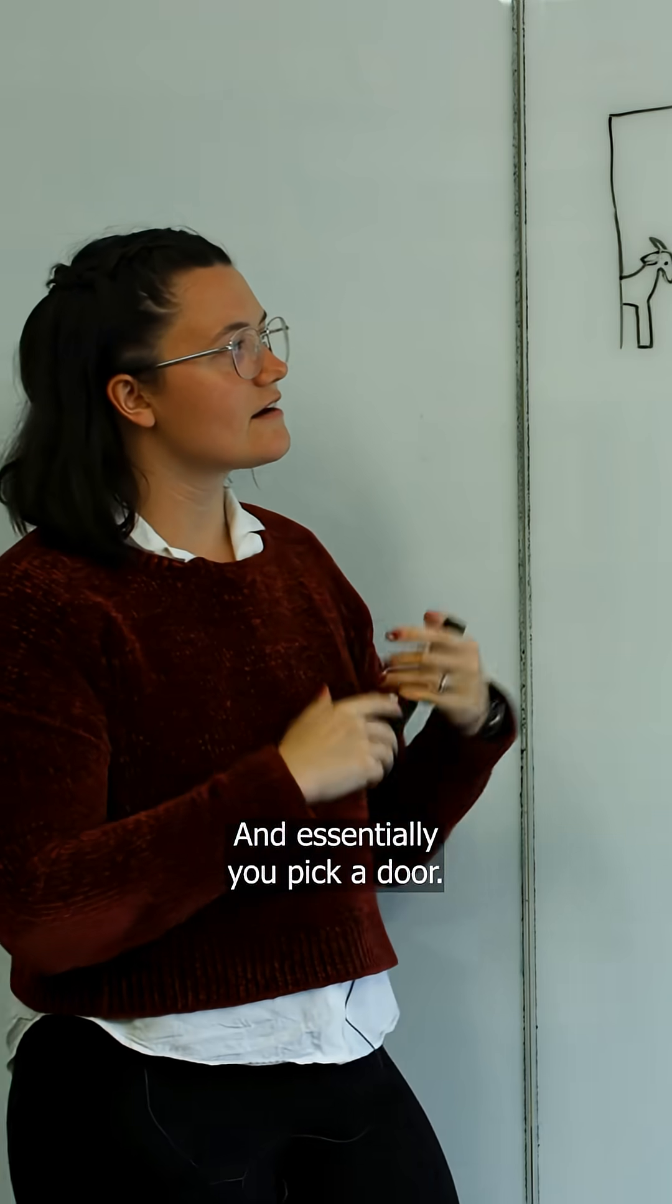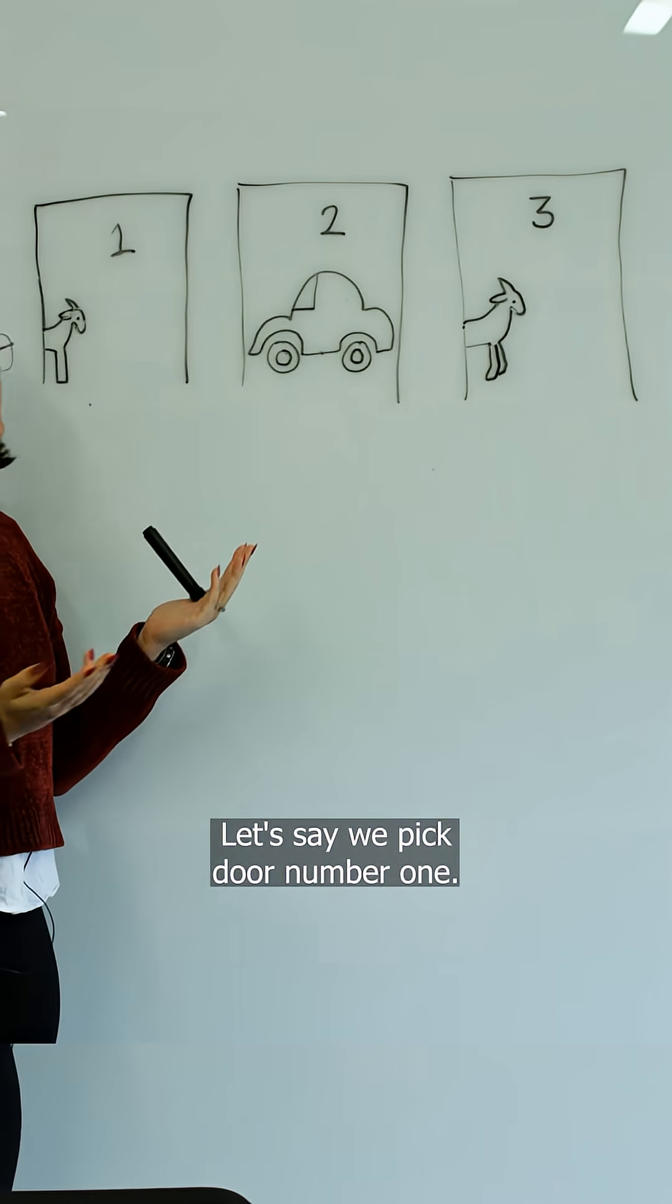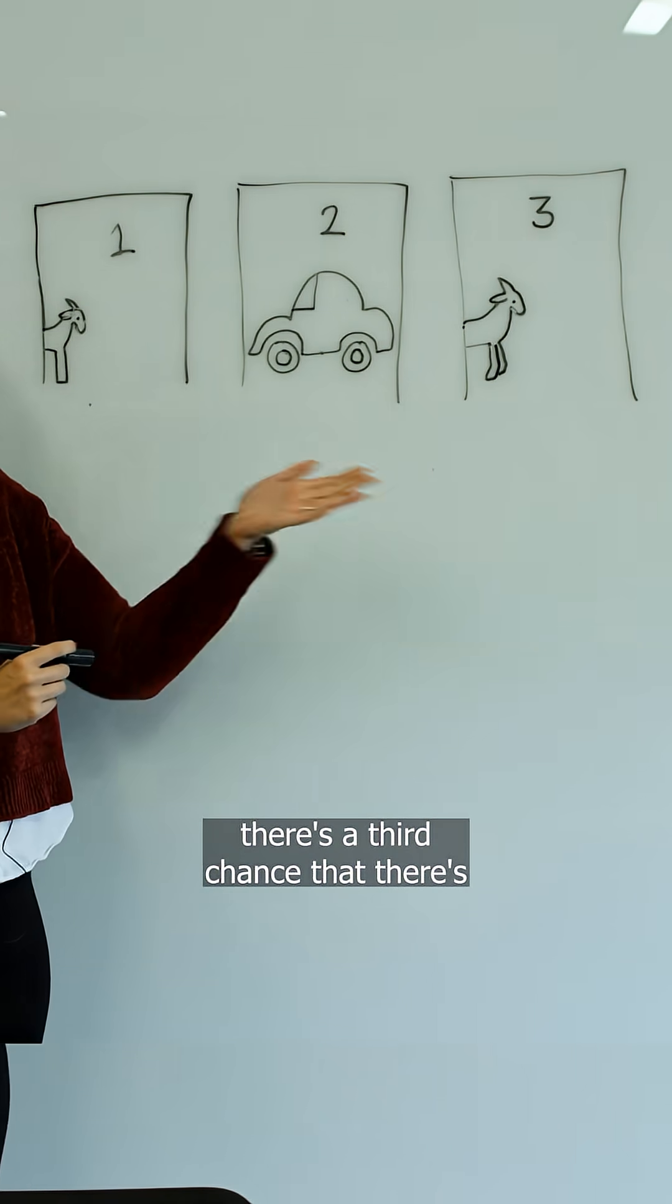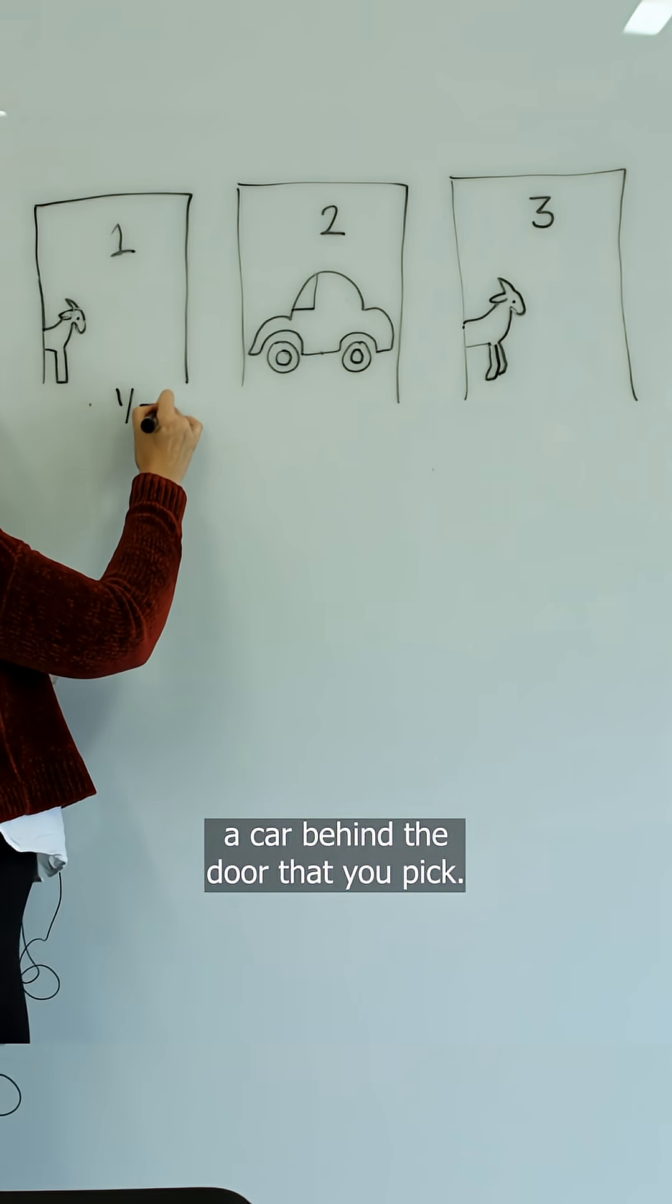You pick a door. Let's say we pick door number one. To start with, there's a one-third chance that there's a car behind the door that you pick.